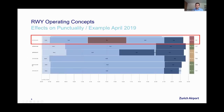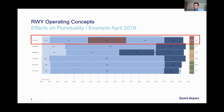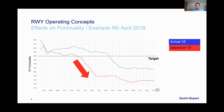Here is one example from April 2019. On that day, we had the south concept in the morning, then switched to the north concept, and around noon we switched to the BISE concept for several hours. At the end of the day, we ended up with punctuality of around 50%. The departure punctuality shows a clear drop around noon when we switch to the BISE concept. It was not possible to recover punctuality to the target of 80%.